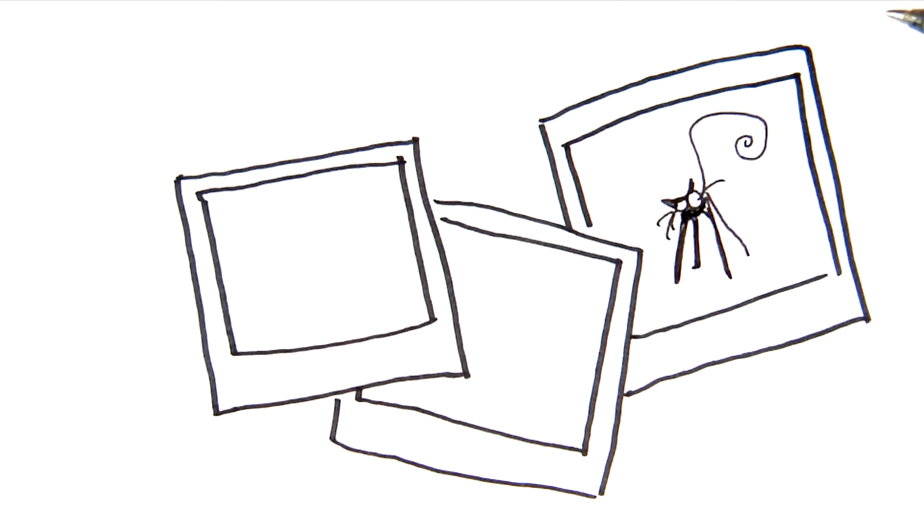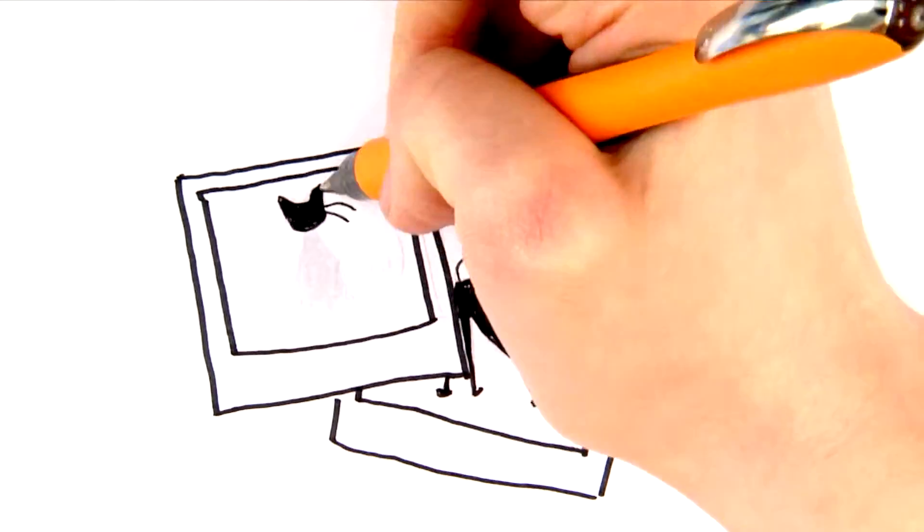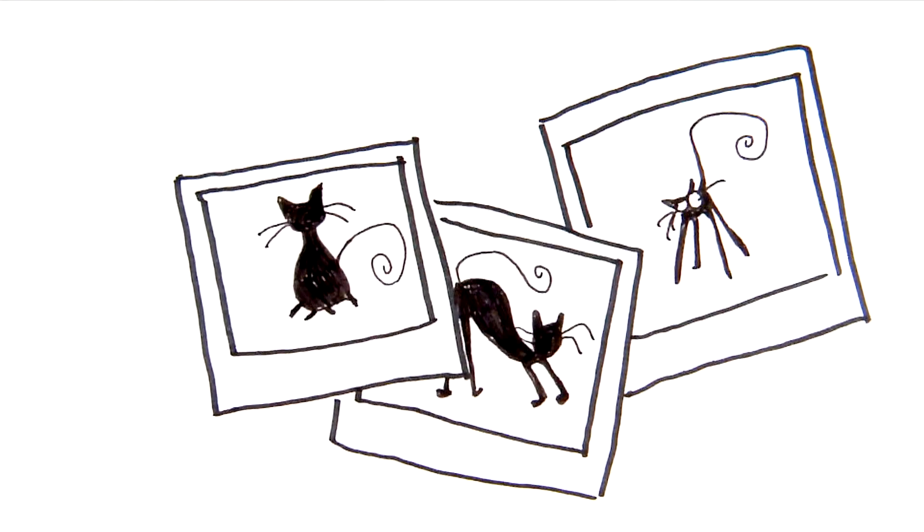In the field of computer vision, some machine learning models are trained to identify specific objects in photos. For example, a classification model trained on the presence of cats could then be used to identify photos with cats in them.